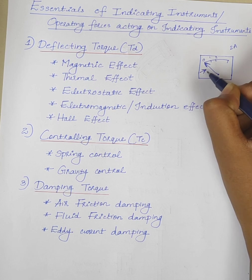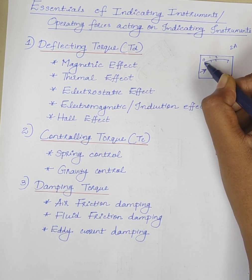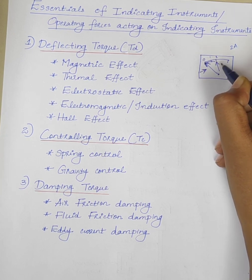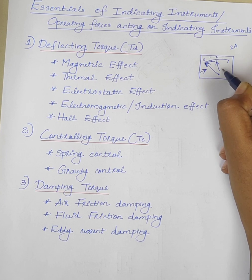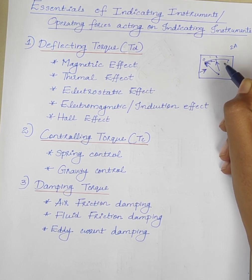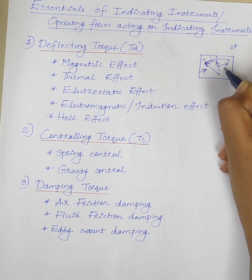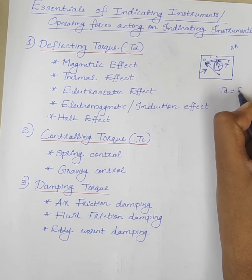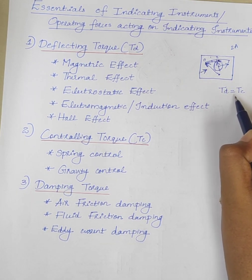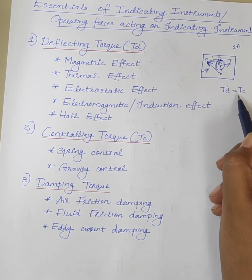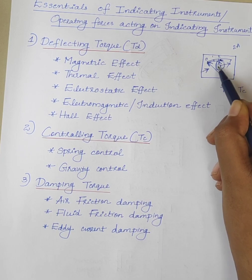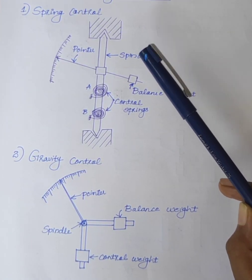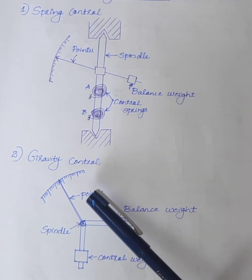According to the magnitude of current, a deflecting torque is produced and the pointer moves from 0 to the final steady state position 2. If controlling torque is not produced, the pointer will swing beyond the final steady state position. When Td is equal to Tc — when deflecting torque is equal to controlling torque — the pointer will come to steady state. Controlling torque in indicating instruments may be provided either by spring control or by gravity control.